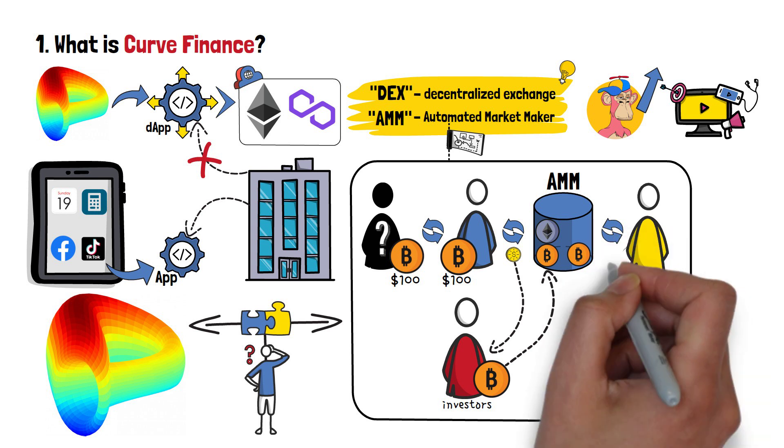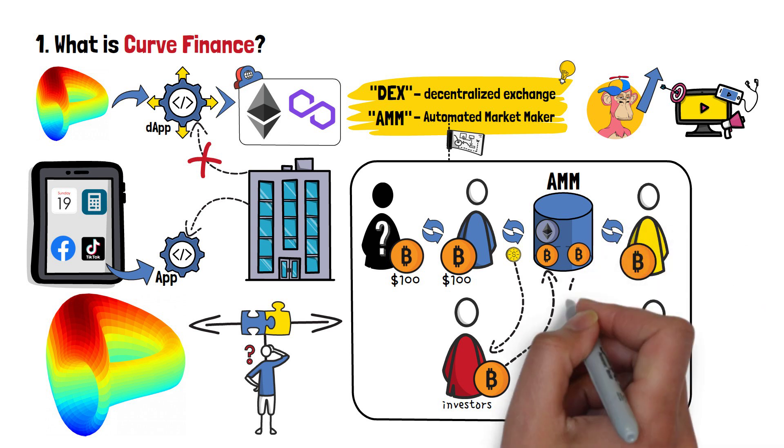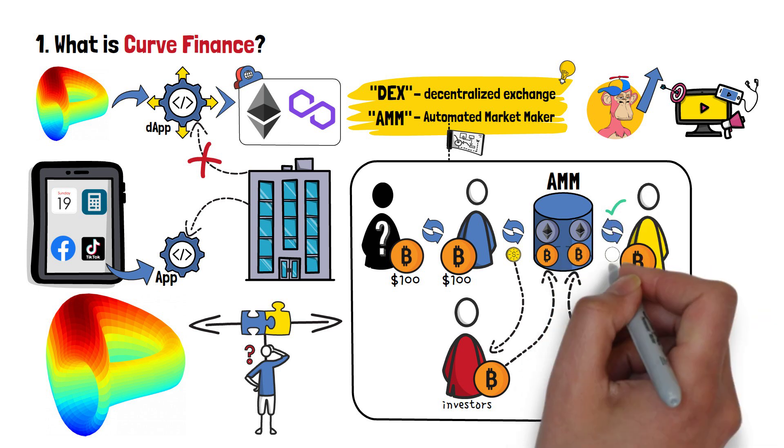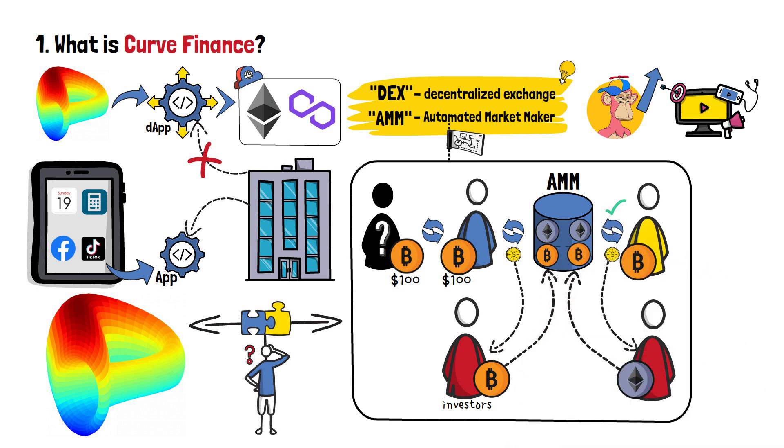By becoming an investor in an automated market maker, you will contribute to one of the many asset pools, and as other people trade with that pool, you'll start receiving rewards. That's exactly how Curve Finance works.